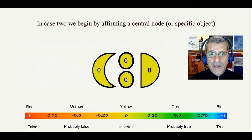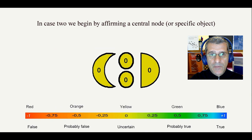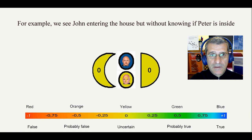In case 2, we begin by affirming the central node or specific object. For example, we see John entering the house but without knowing if Peter is inside. From there, we deduce that it is true that there is someone.